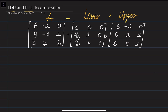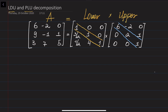What we call the lower triangular matrix is that if you look at the diagonal entries, all the entries above the diagonal should be equal to zero. And what we call the upper triangular matrix is that if you look at the diagonal, all the entries below the diagonal should be equal to zero.